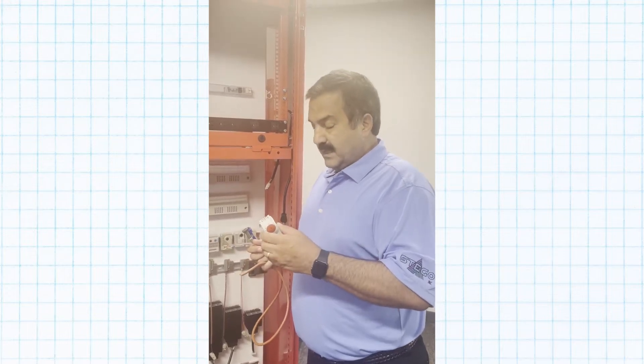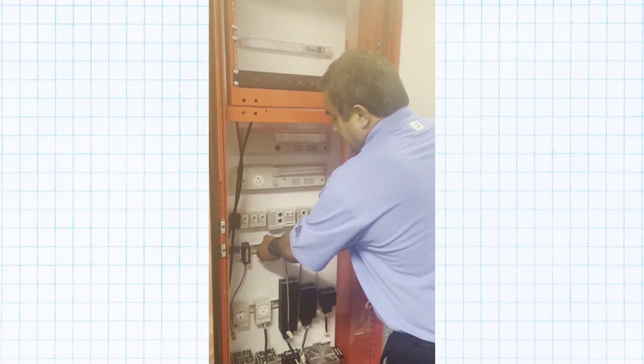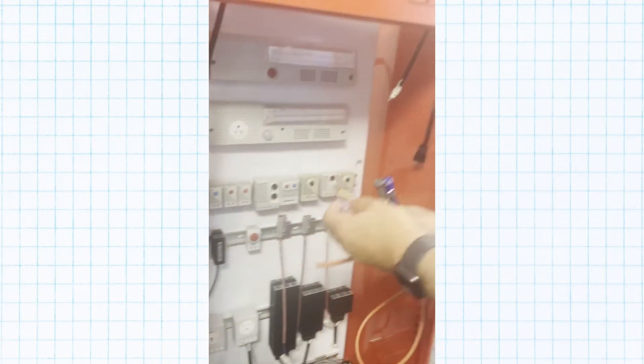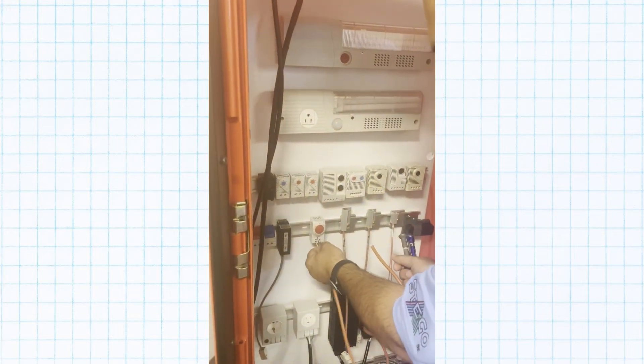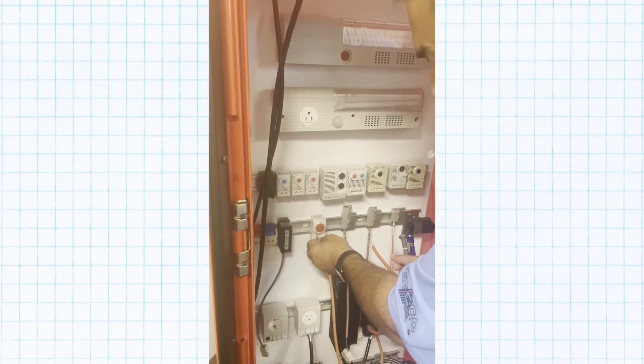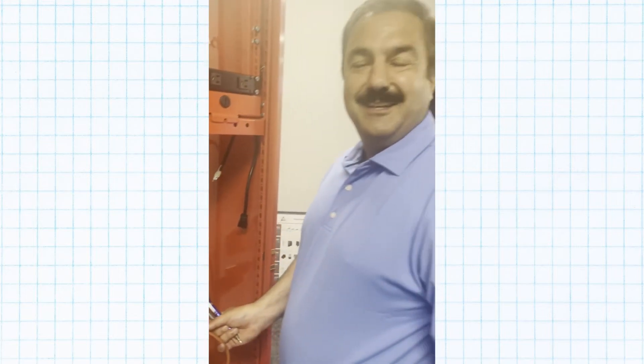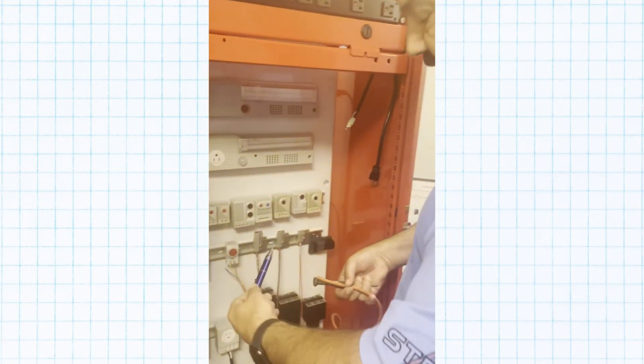I'm going to show you. First, you mount it on the din rail and you connect the wiring by simply pushing it in. And it's ready to use. It's installed within seconds. You can adjust the temperature.